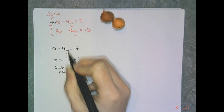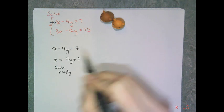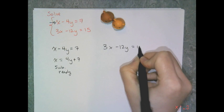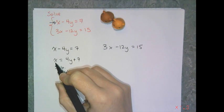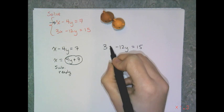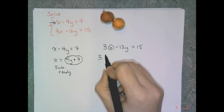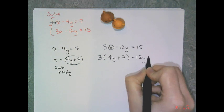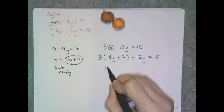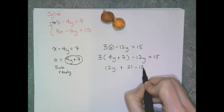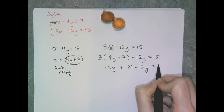Which means I can go ahead and plug it into the second equation. So I take 3x minus 12y equals 15 and I'm going to plug in this x, 4y plus 7 for this x. So 3 open parentheses 4y plus 7 minus 12y equals 15. I distribute, I get 12y plus 21 minus 12y equals 15.